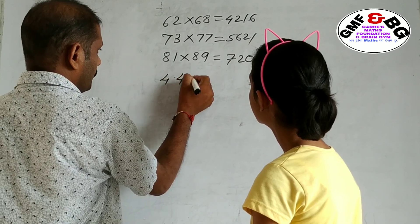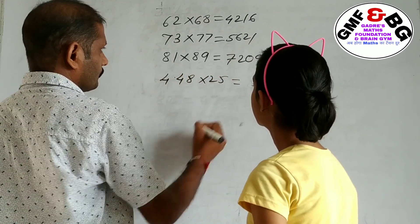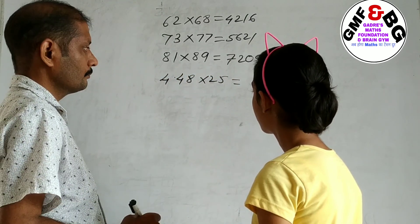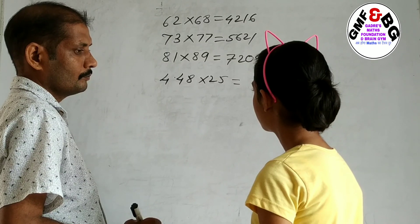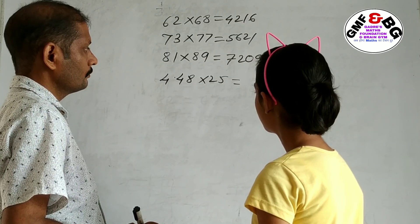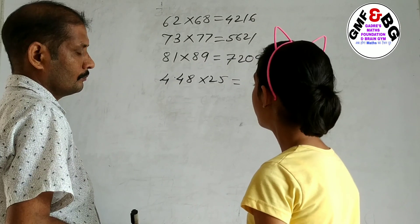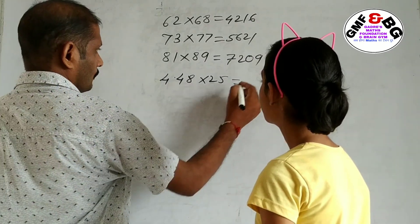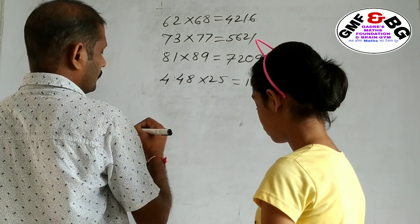I will ask you now. 4.48 into 25 equals 525.